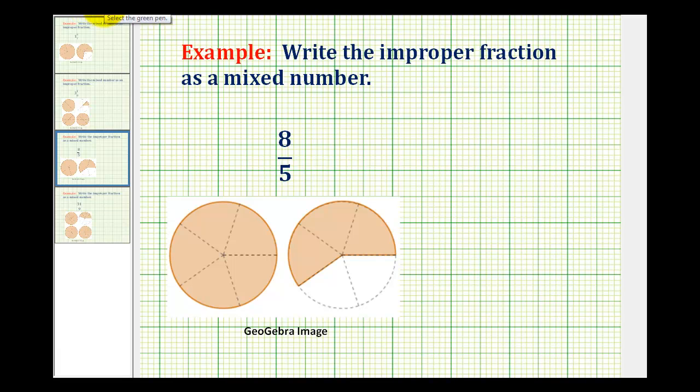We want to rewrite the improper fraction eight-fifths as a mixed number. The procedure for converting an improper fraction to a mixed number is to divide the numerator by the denominator.